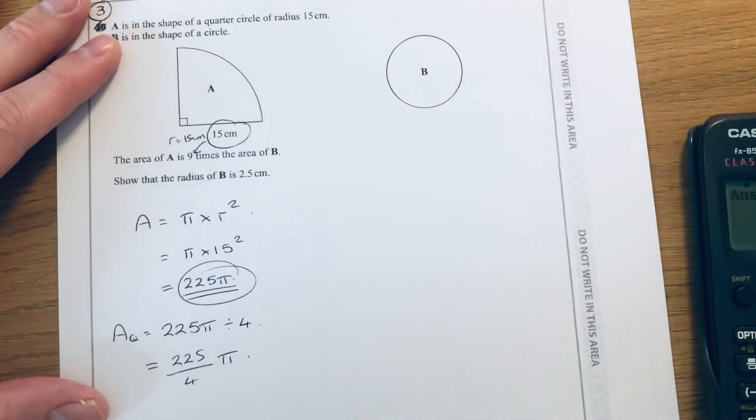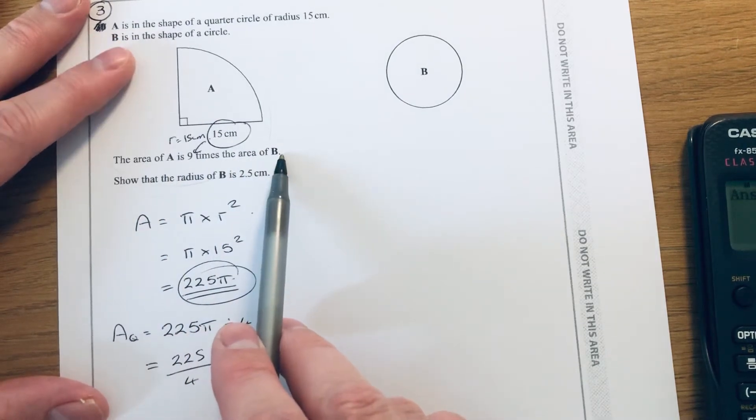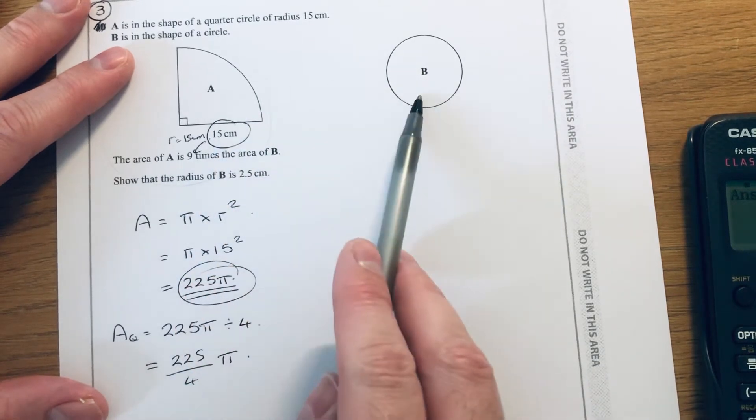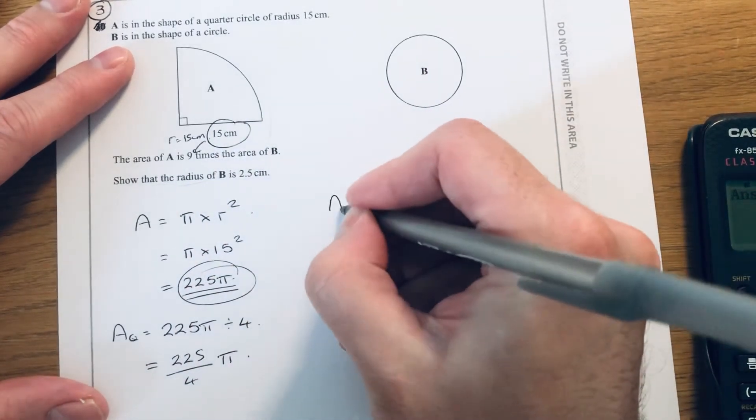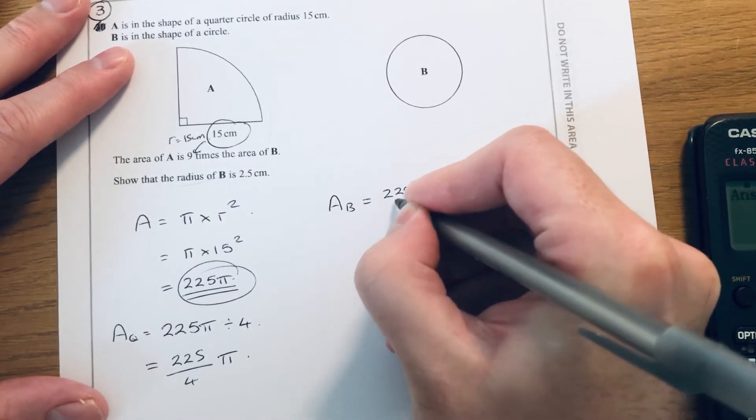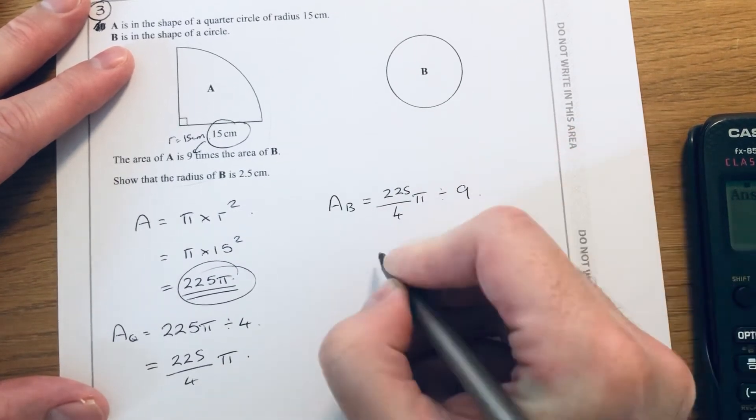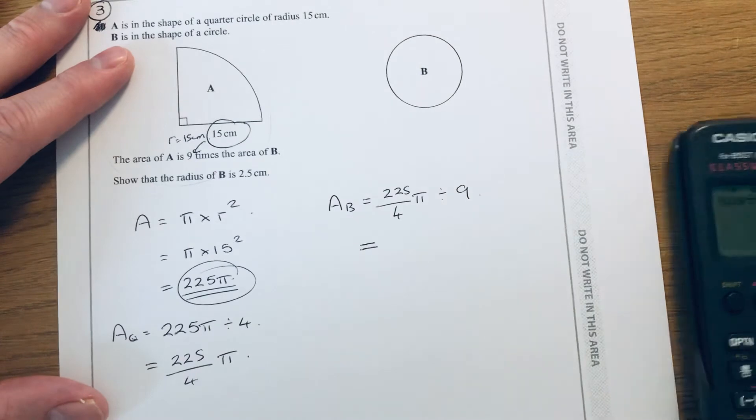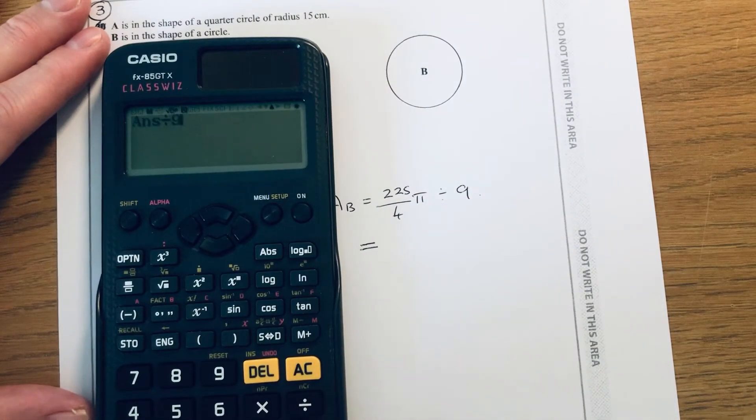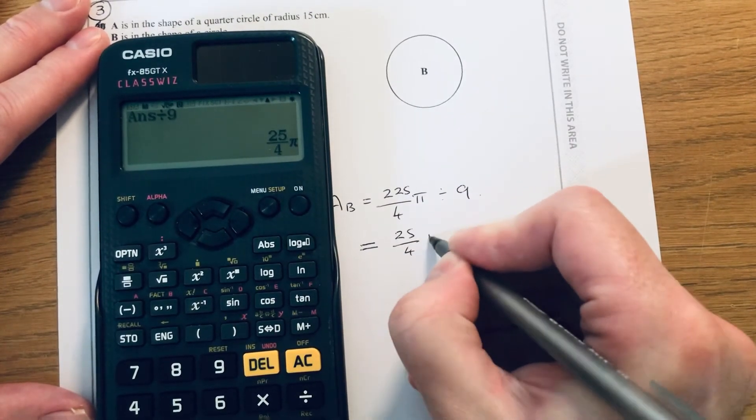It says the area of A is 9 times the area of B. So if we divide this answer by 9, that will give us the area of circle B. So it's 225 over 4 pi divided by 9. I've left that on the calculator so I don't have to type it in again. So that will give us 25 over 4 pi.